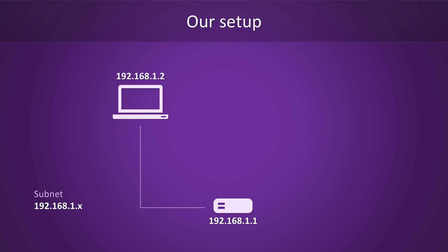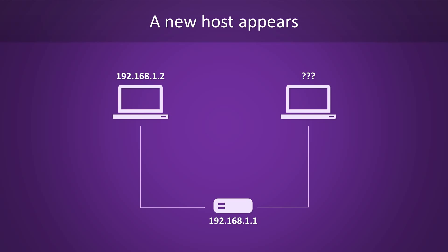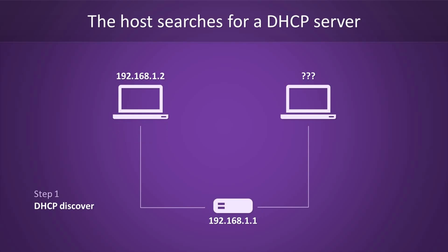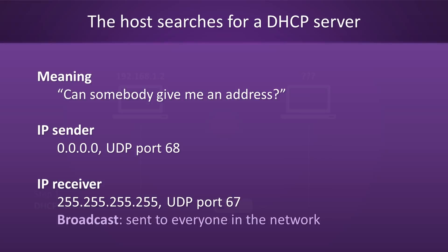Here's our trusty old network again. We have a router set up at .1, and we have a host set up at .2. Let's consider what happens when a new host appears. Step one of the process is the DHCP discover step. This is where the host searches for any available DHCP servers to get an address from. Since the host does not know where our DHCP server is, it will just send out a discover request to everyone on the network — this is called broadcasting. Since our new host does not yet have an IP address, the sender field of this packet will be set to 0.